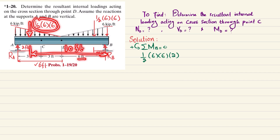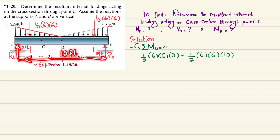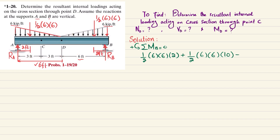You can see 6 plus 1 plus 3 gives the 10-foot distance, and this is also counterclockwise, so positive: 1/2 × 6 × 6 × 10. The third moment is due to RA at a perpendicular distance of 12 feet, producing a clockwise moment, so it is negative: −12 × RA = 0. Solving this gives RA = 18 kips.